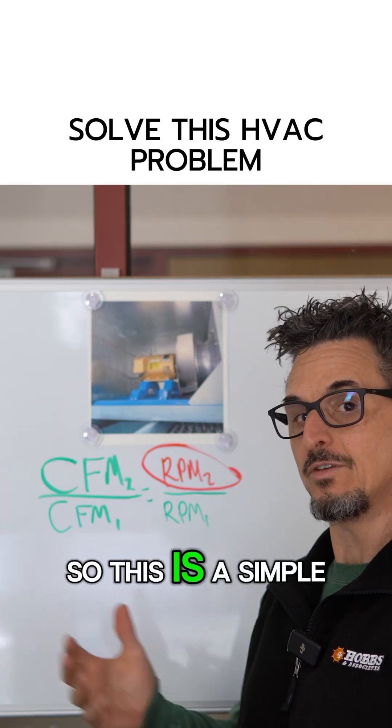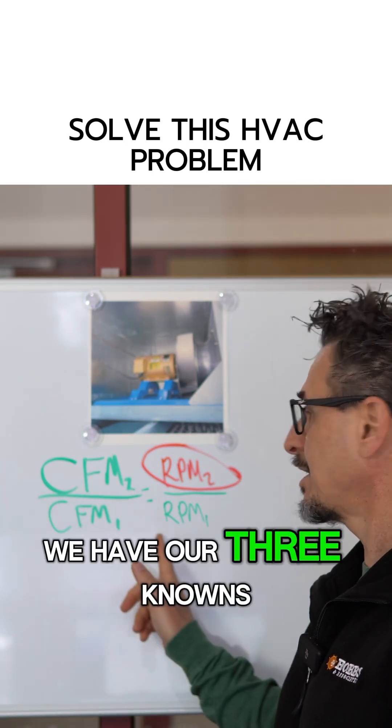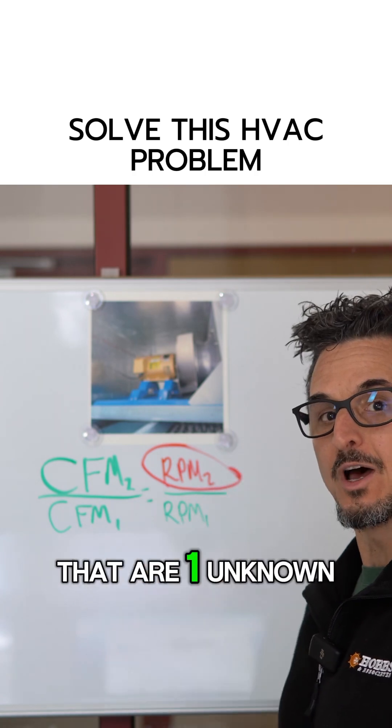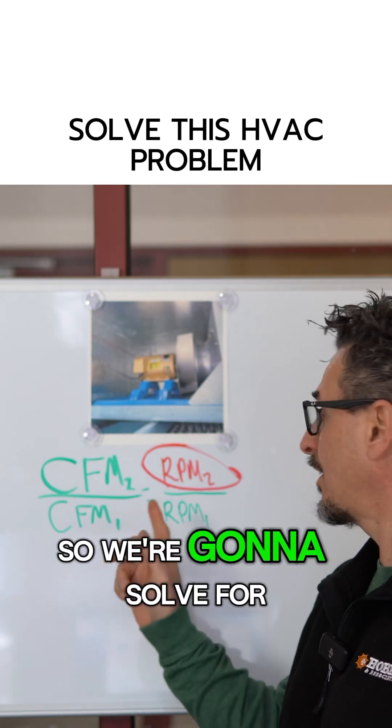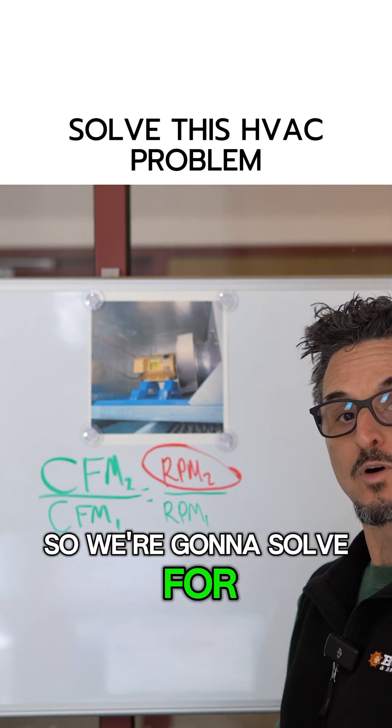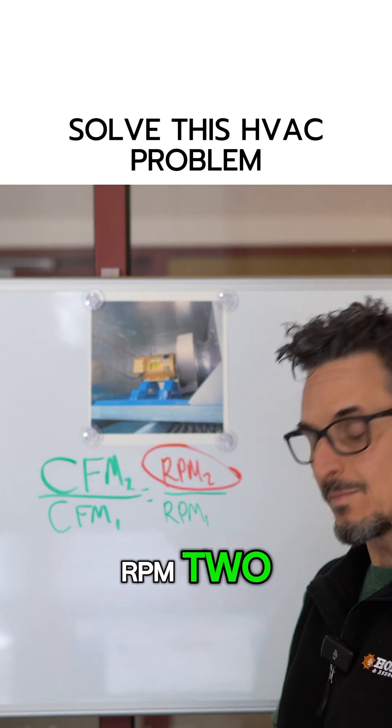This is a simple equation. We have our three knowns and our one unknown, so we're going to solve for RPM two.